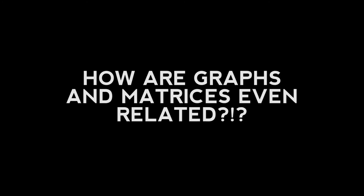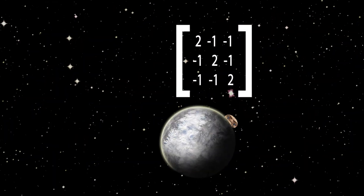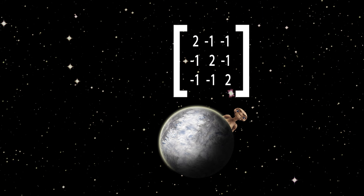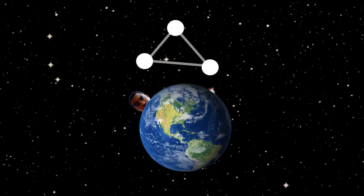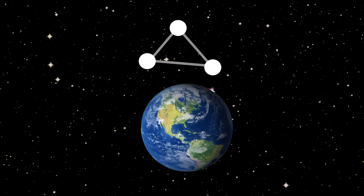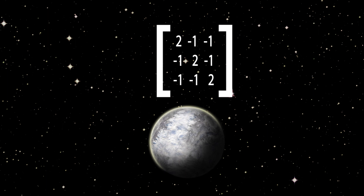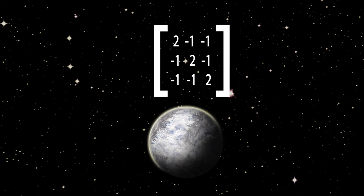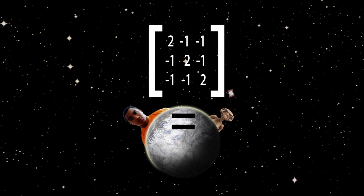You might wonder, how are matrices and graphs even related? So we're here on Earth, the graph planet. If I wanted to travel over to the planet of matrices and grids and vectors, I would be seen as an invader and they would execute me. However, if I use my super cool mass transformer and turn myself into an alien like Ben 10, I could go to matrix land without dying.